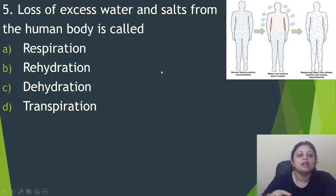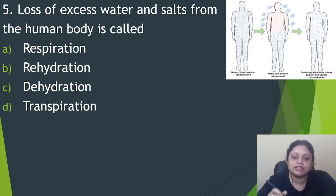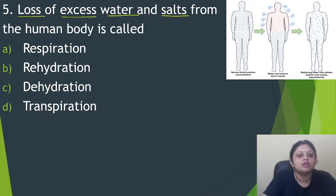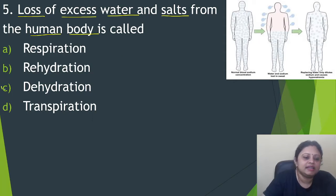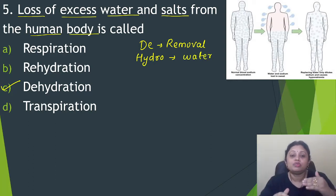Next question: loss of excess water and salts from the human body is called? Option A, respiration. B, rehydration. C, dehydration. D, transpiration. If you know the answer, you can write in the comment box. The answer is dehydration. 'De' means removal, and 'hydro' relates to water. Since there is excess loss of water from our body, we call it dehydration.